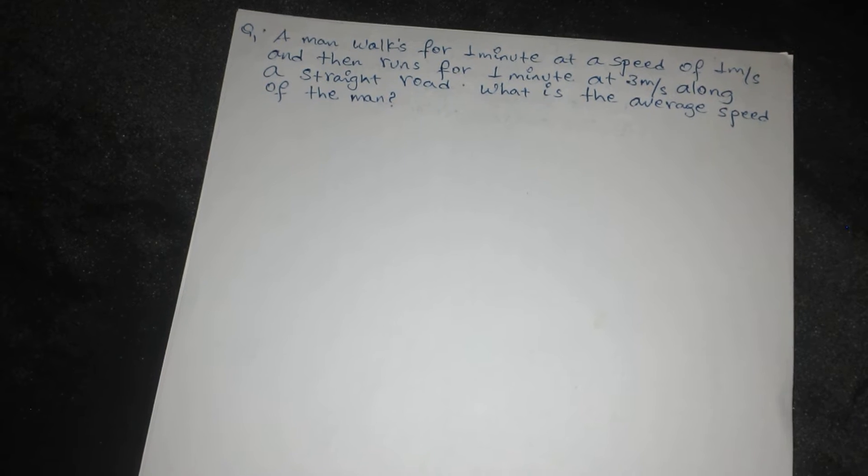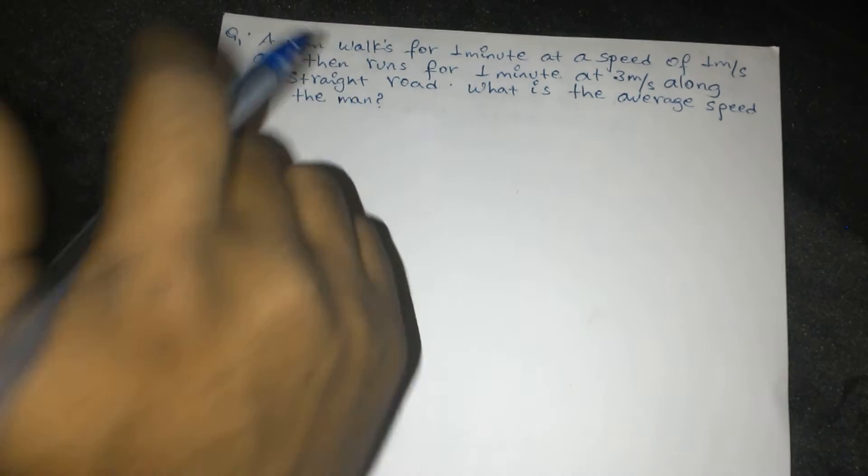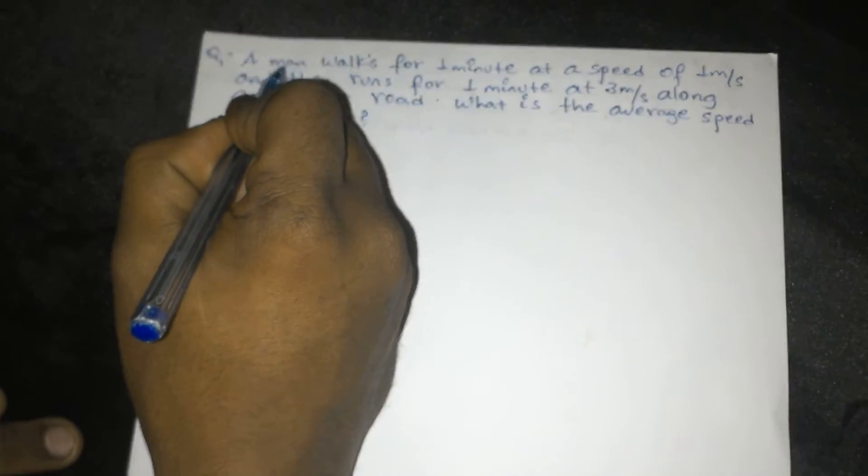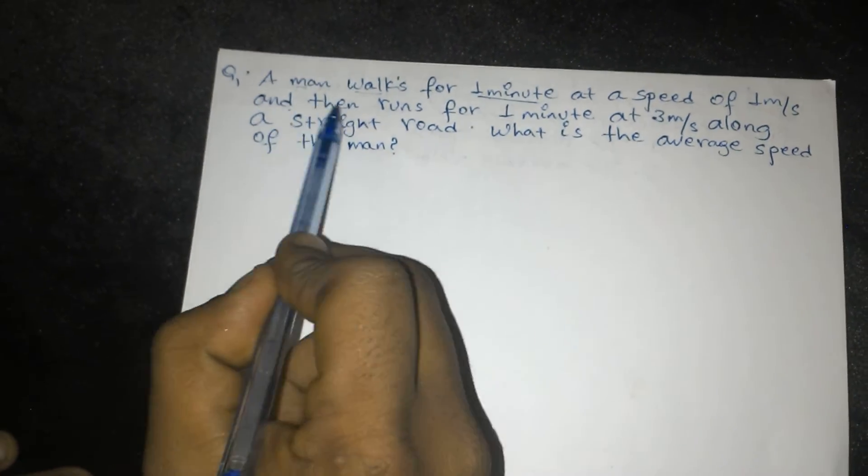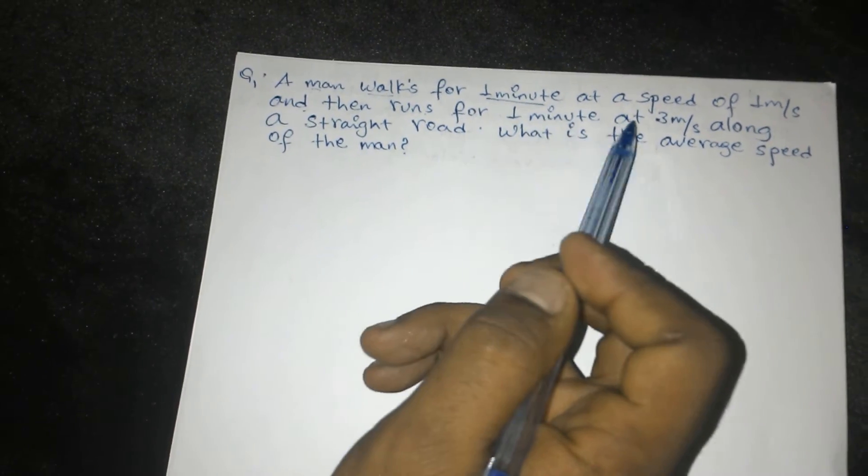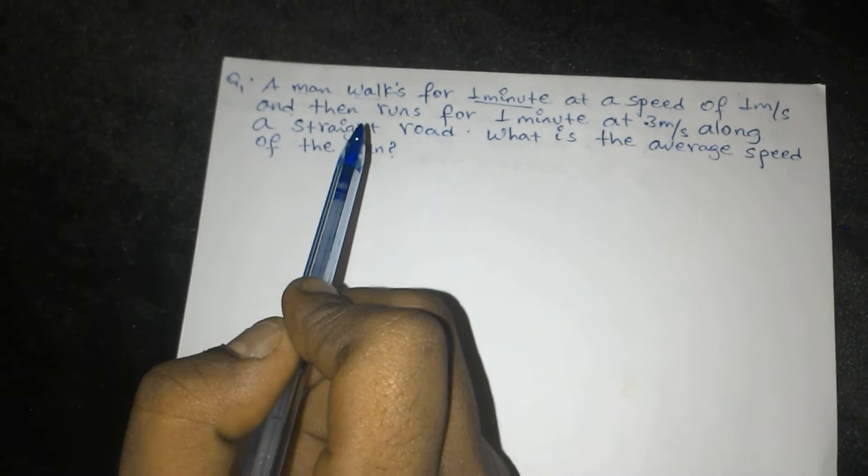The question says that a man walks for 1 minute at a speed of 1 meter per second, and then ran for 1 minute at 3 meters per second along a straight road. What is the average speed of the man?